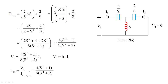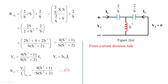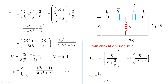This result is in ohms. From the current division rule, i2 = −i1 multiplied by the opposite impedance (s) divided by the sum of the parallel impedances. This gives i2 = −i1·s² / (s² + 2). Therefore h21 = i2/i1 = −s² / (s² + 2).